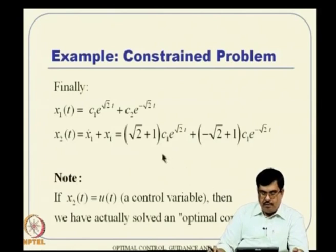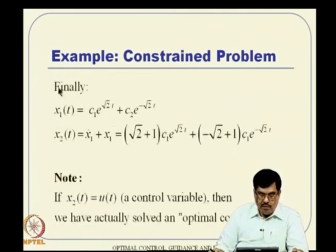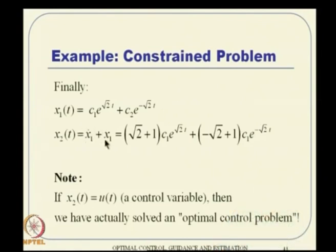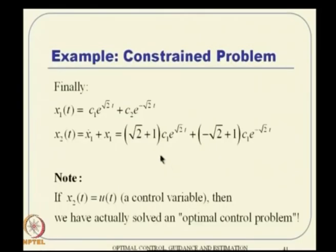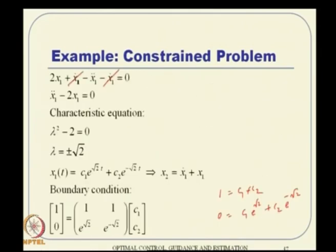Finally, this expression turns out to be the same as before. Once c1 and c2 are solved, x1(t) is determined and x2 equals x1-dot plus x1. This is how the solution is obtained. If we interpret x2 of t as u of t—a control variable—then we have actually solved an optimal control problem. This gives a connection between calculus of variation and optimal control, which is the motivation for having this example here and what we are gearing up toward in the next class.